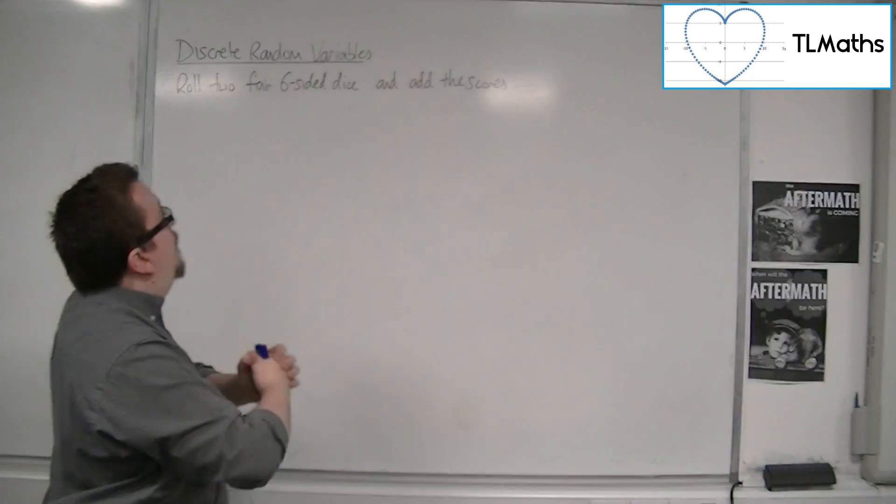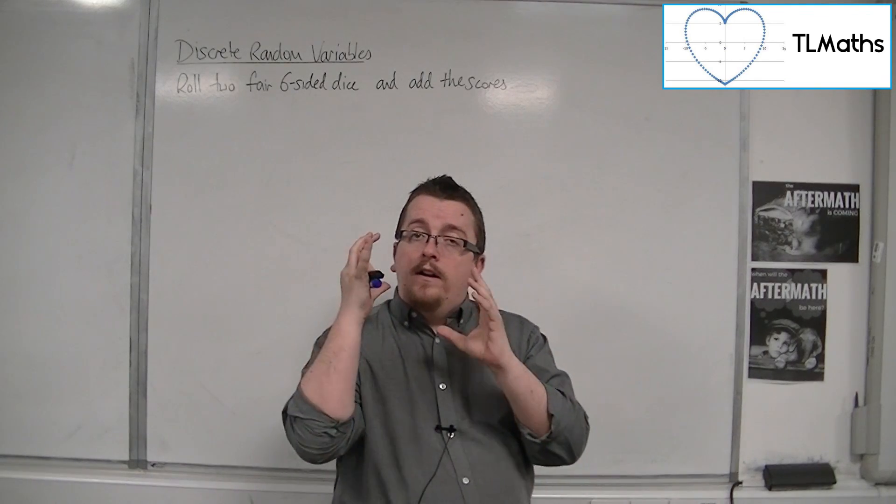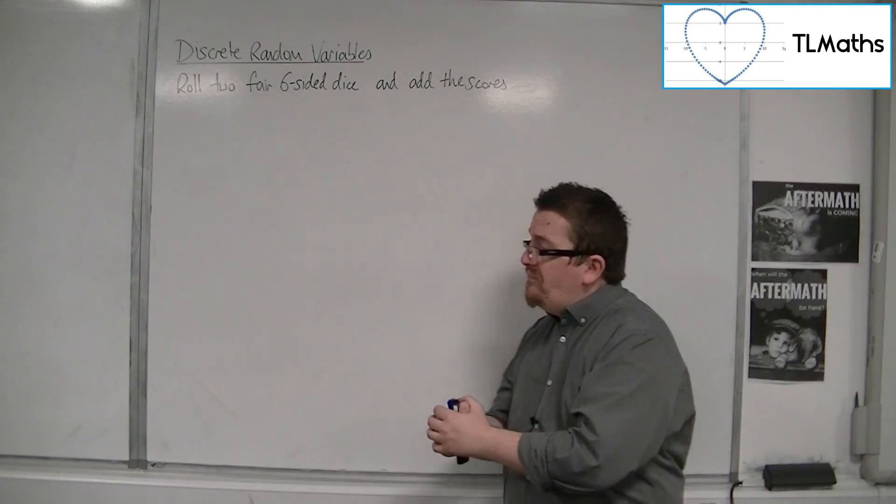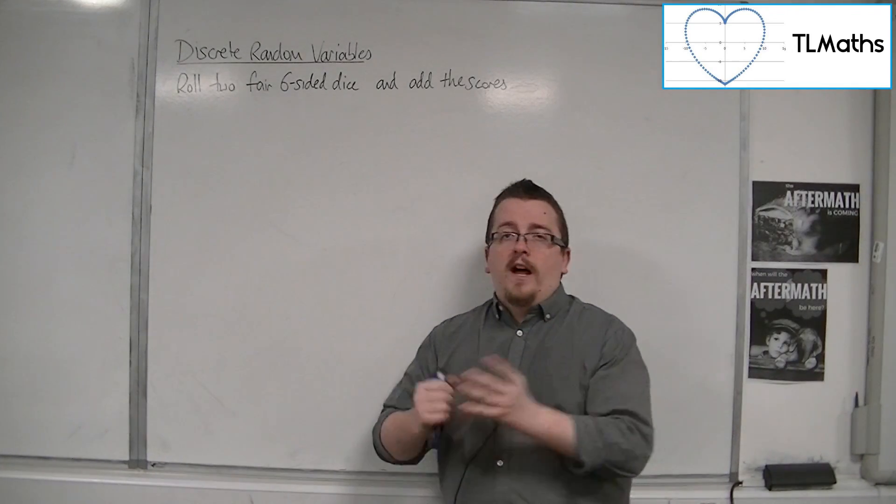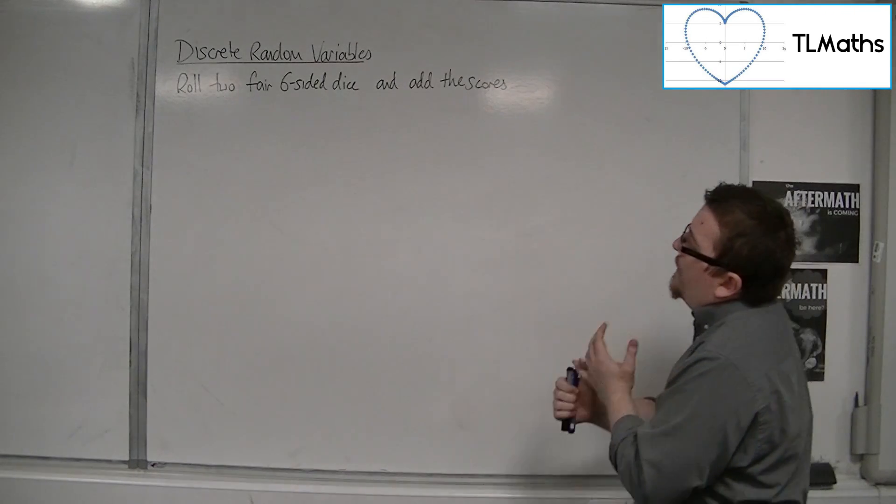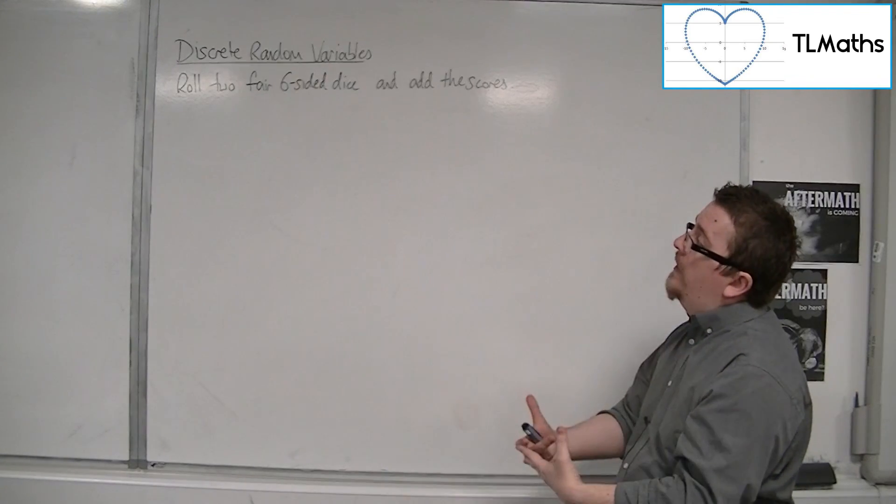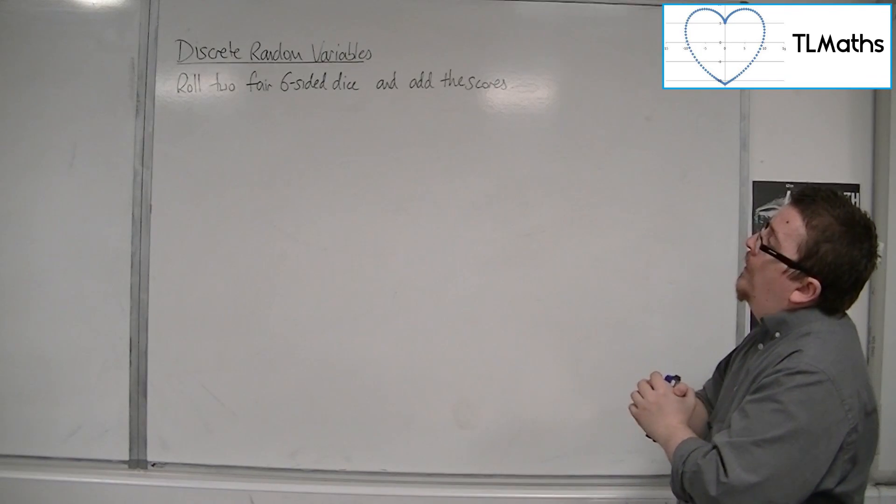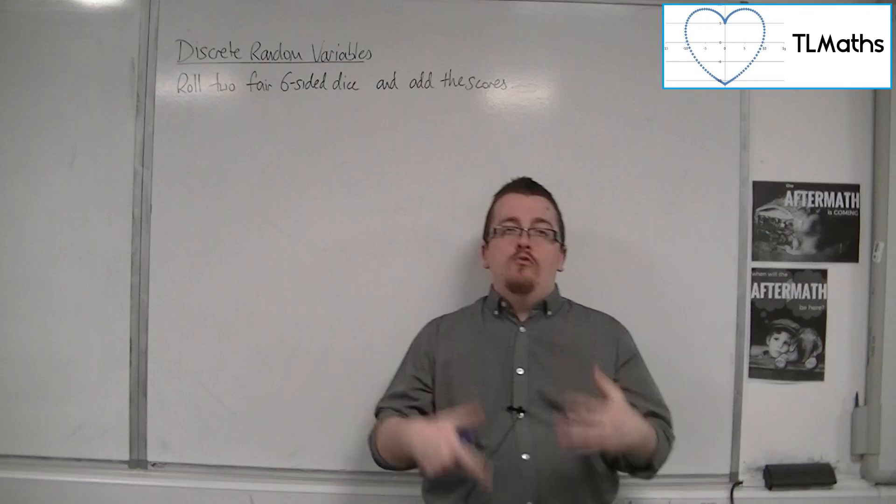The discrete random variable x is the score of adding those two dice together. So what do we mean by discrete? A discrete set of data is a set of data that can only take on particular values. When we're adding these scores together, we can only get certain scores. I can't get a score of 2.5. I can't get a score of 100. There are only particular scores that I can get. Secondly, random. Well, is it random? Yes, in the sense that I am rolling a die and because it's fair, the result will be random. It could be any of them. Variable. We would say it's a variable because the scores can vary. Hence this discrete random variable.